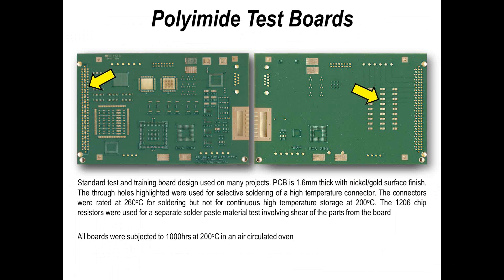This is the board. We assembled the through-hole components to the through-hole terminations you see on the left-hand side of the board in the 96-way connector position. It's a 1.6 millimeter board, four-layer construction, although we did do some thicker boards as well. The SMT side we won't be discussing, but those were dedicated to 1206 chip components. The reason for that is simply because we have a lot of data on shear force and reliability of solder joints on this particular size of component.